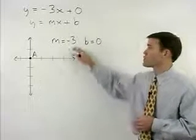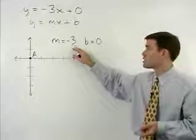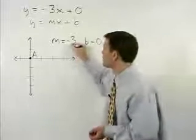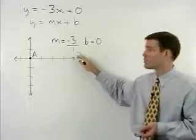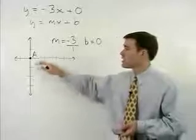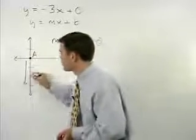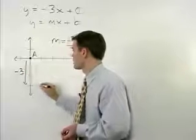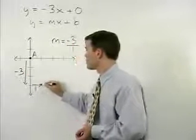Remember that when your slope is an integer, you can change it to a fraction by putting it over 1. So our slope of negative 3 can be thought of as negative 3 over 1. And from point A, we would go down 3 units and over 1 to plot point B.